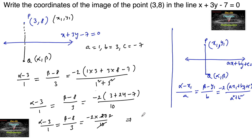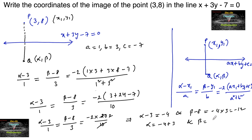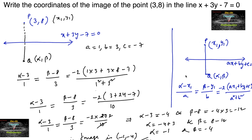So alpha minus 3 equals minus 4, and beta minus 8 equals minus 4 times 3, which is minus 12. Therefore alpha equals minus 4 plus 3 equals minus 1, and beta equals 8 minus 12 equals minus 4. So the image is (minus 1, minus 4).